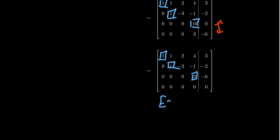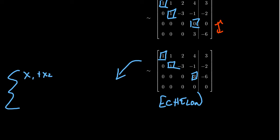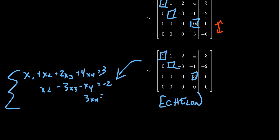At this point the matrix is now in echelon form. If you were solving by Gaussian elimination, this is where you would stop and read the system of equations: x1 plus 2x2 plus 2x3 plus 4x4 equals 3; x2 minus 3x3 minus x4 equals negative 2; and 3x4 equals negative 6. The row of zeros gives 0 equals 0, which adds nothing. You could then solve by back substitution — that's Gaussian elimination.